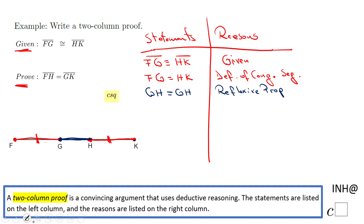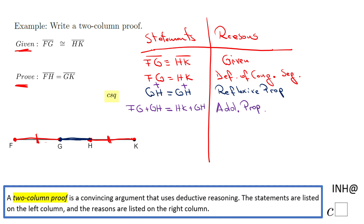Now, what I'm going to do is add these two segments together. I'm going to add FG plus GH on the left side, and on the right side we have HK plus GH, and these two need to be equal. We are adding two equalities, and that will be the addition property of equality.